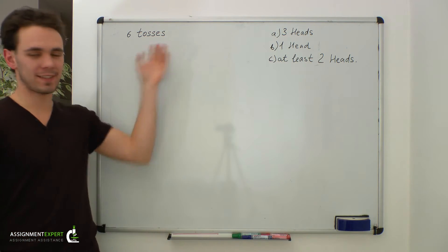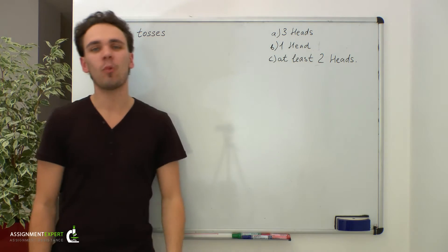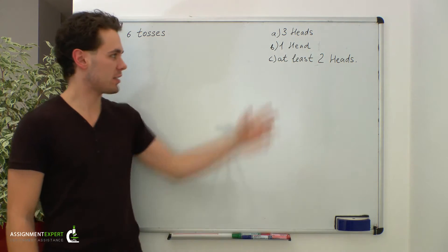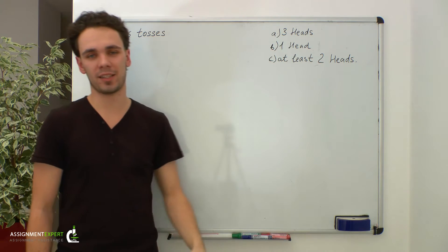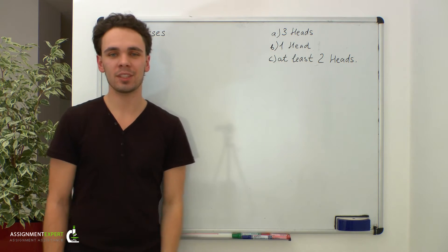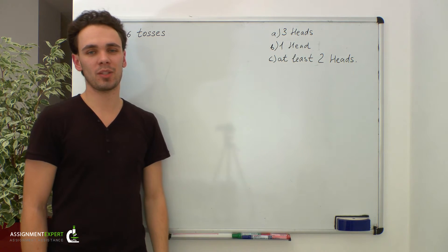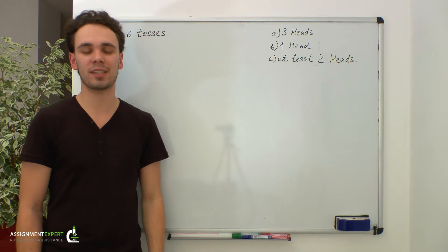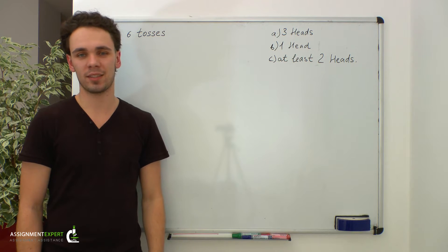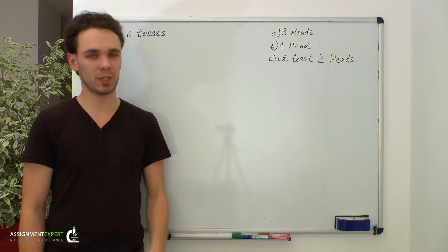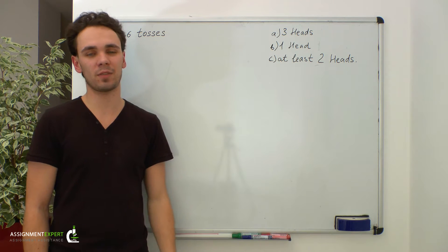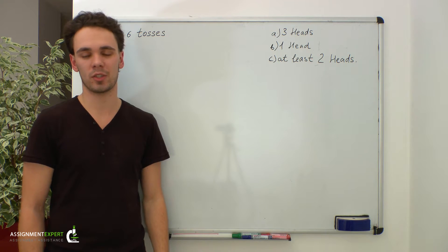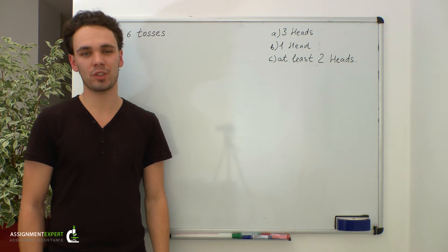Suppose we toss a coin six times. What is the probability of getting three heads, one head, or at least two heads? Tossing a coin six times is a series of equal independent tests. In each toss we can get either head or tail, and the result is not influenced by other tosses. Such a series of tests is known as Bernoulli trials.